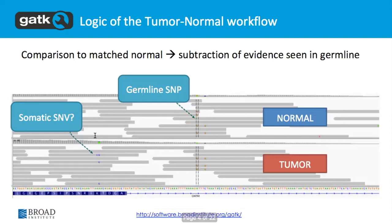We can address the problem of germline mutations in our tumor sample by subtracting that signal using the matched normal sample. It's more or less straightforward: if you see a variant signal in the tumor, you look at the normal — if it's also there, we probably don't want to call it. But if it's in the tumor but not in the normal, we'll emit it.